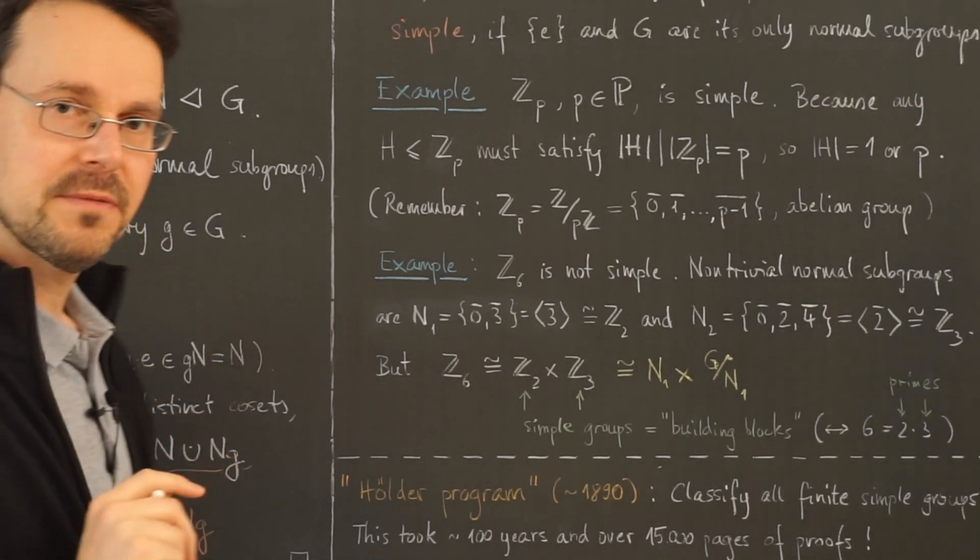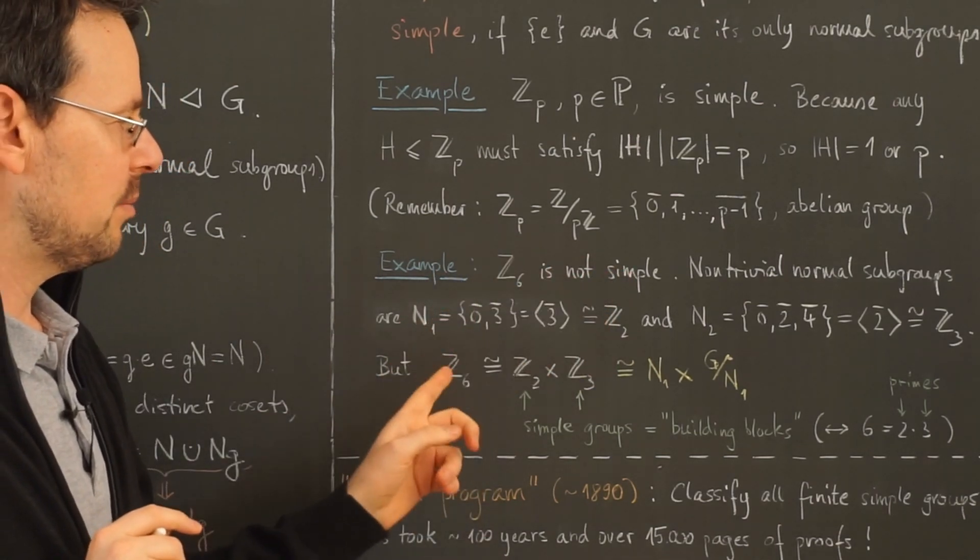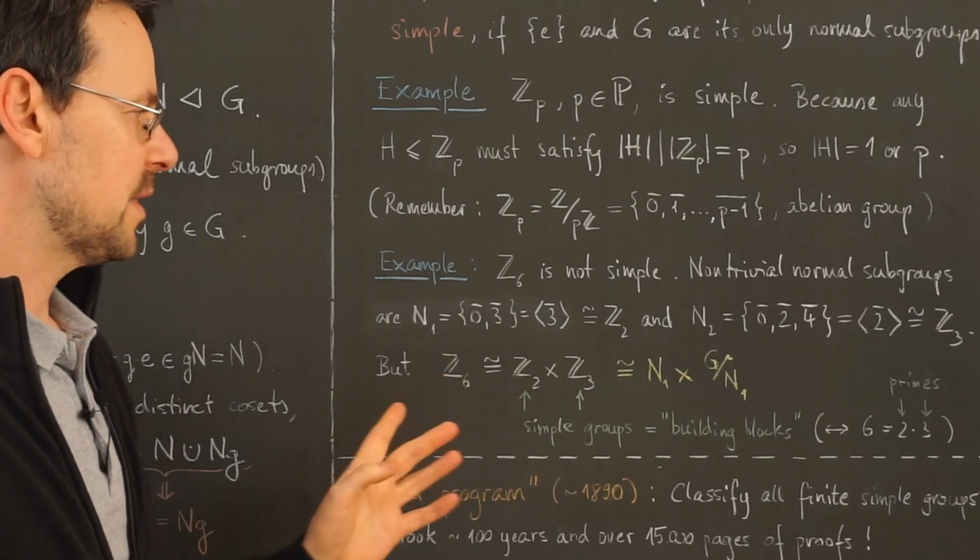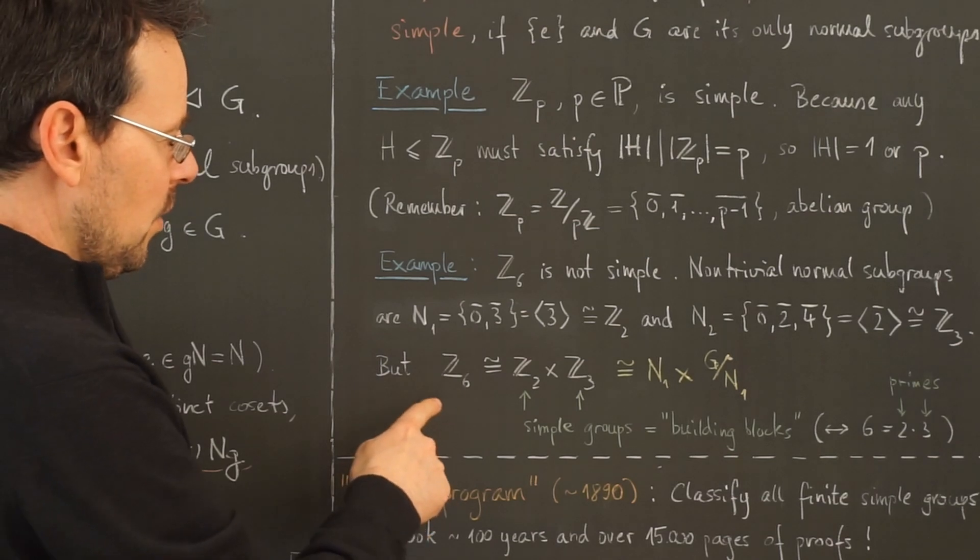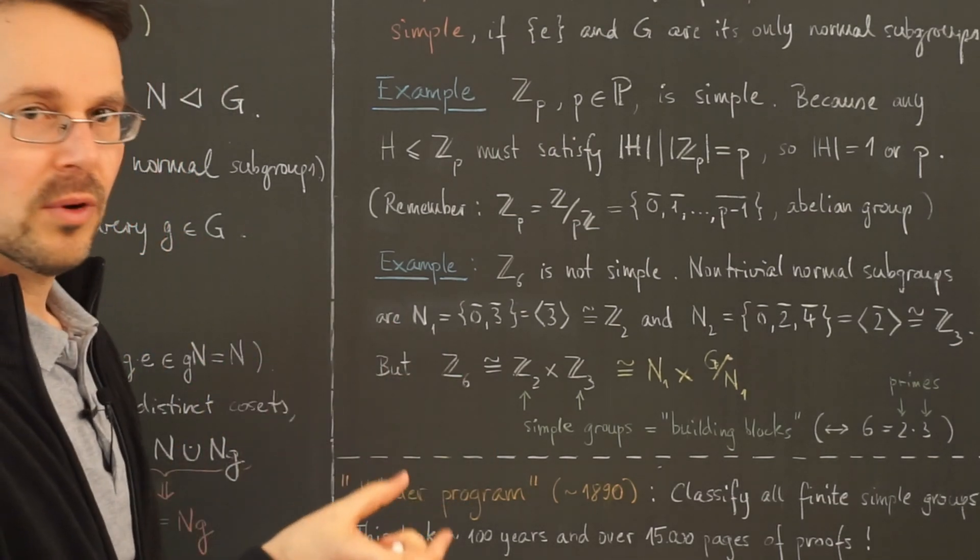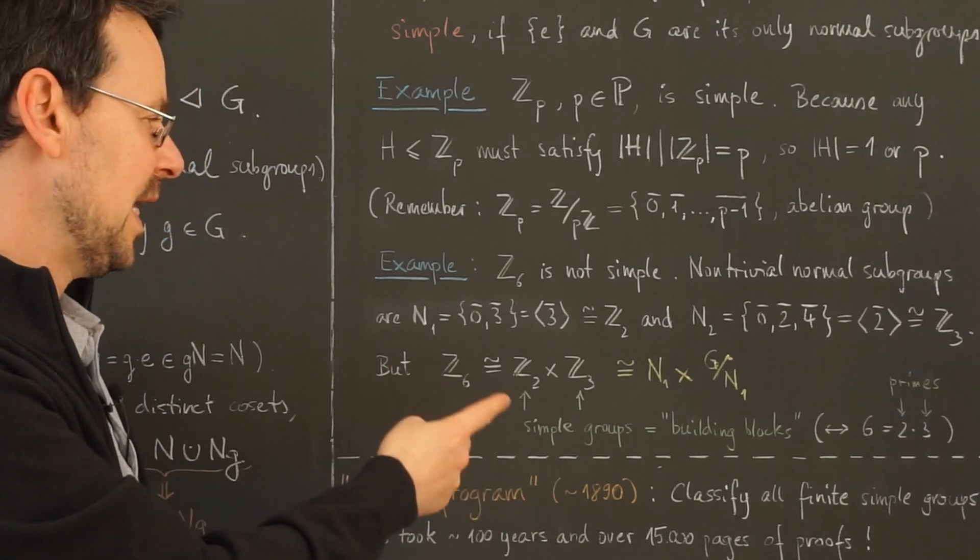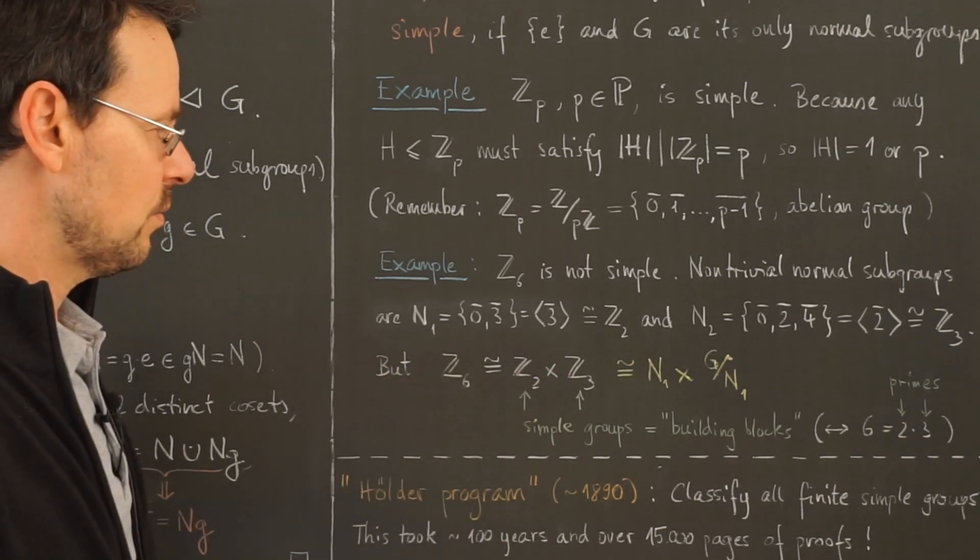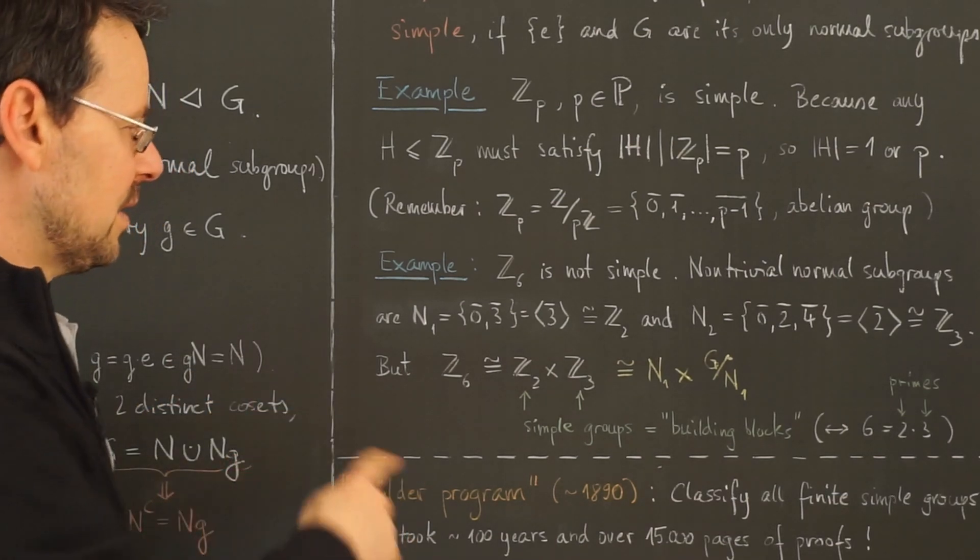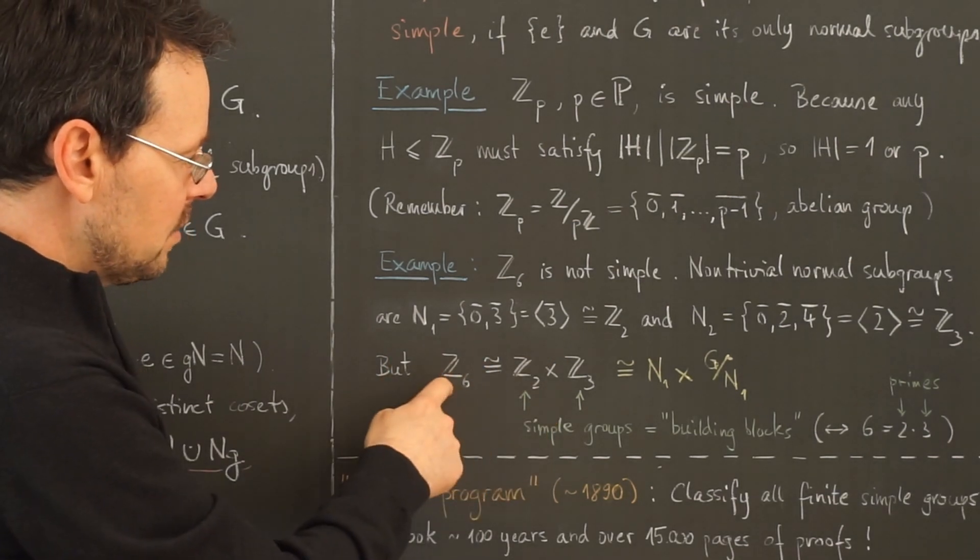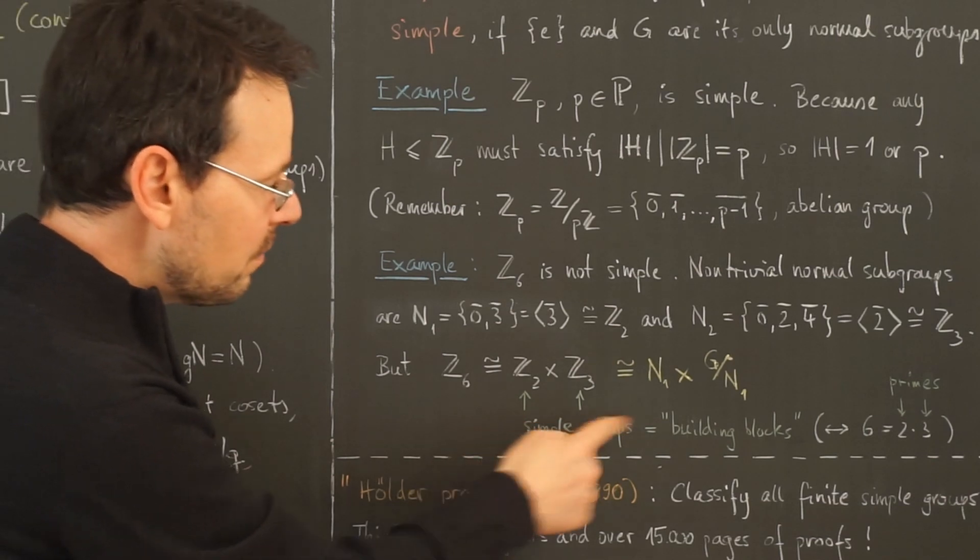And now comes a very important observation. This group itself is not simple, but it can be written as the product of simple groups in the following way. Oh, this was a long time ago when we talked about direct products of groups. I think this was an example or it was an exercise to check that this is true actually using group tables, so without any theory. In either case, this here is true, this group is isomorphic to this direct product of simple groups.